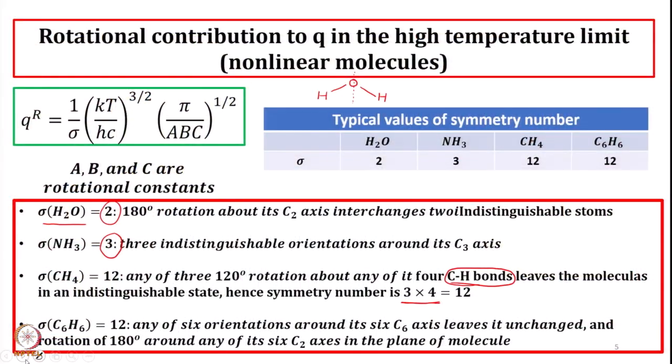These were simple examples. For complex molecules, knowledge of symmetry will help in determining the symmetry number. What is important to recognize is that the symmetry number is required because we do not want to overcount the number of accessible rotational states.